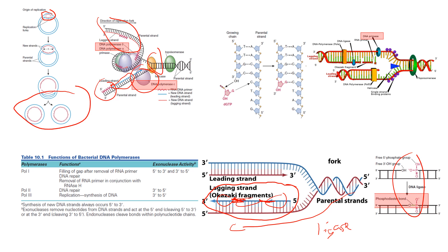Eukaryotes have three polymerases. DNA polymerase 1 essentially removes gaps in DNA and is more of a maintenance polymerase that can repair DNA. Polymerase 2 is exclusively a DNA repair enzyme. Polymerase 3 is what we primarily use in DNA replication — it's kind of the main attraction, while 1 and 2 are more maintenance.